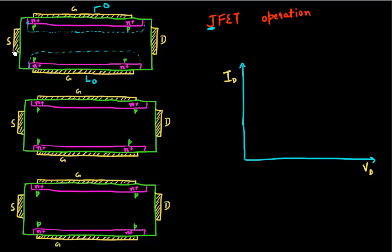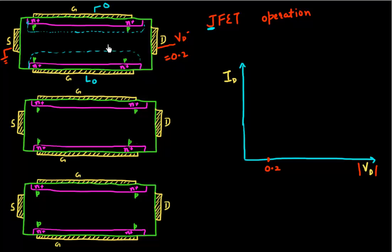I'll ground my source and apply a small drain voltage — a negative drain voltage of, let's say, minus 0.2 V. Let me plot the modulus of this drain voltage. So there's a field in the y direction, along the channel, while x is the perpendicular direction.